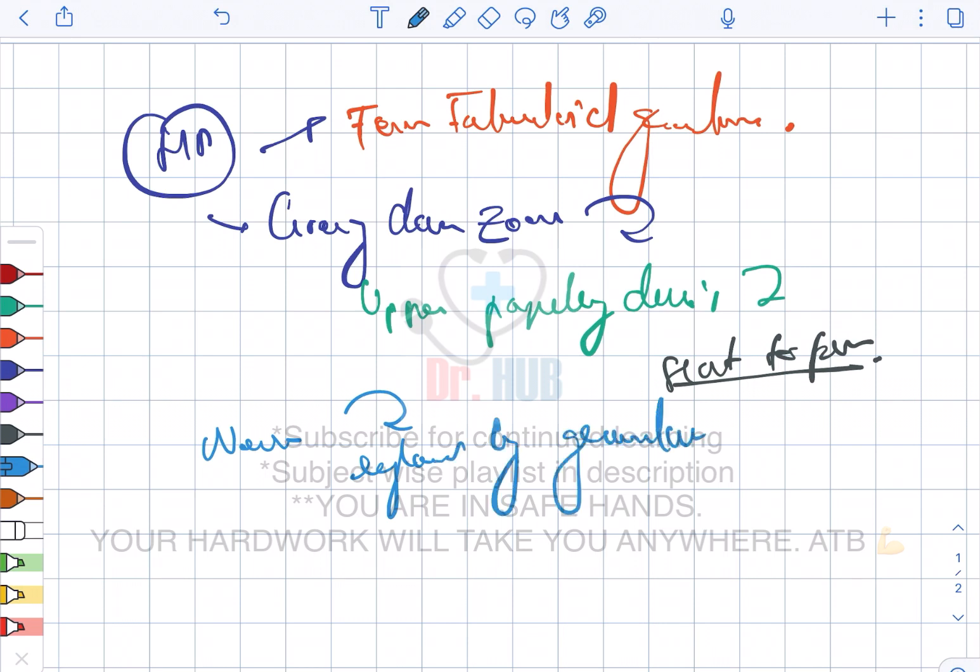The nerves are replaced by the granulomas. The fragmented bacilli are seen with the AFB stain.